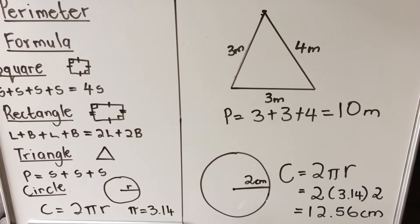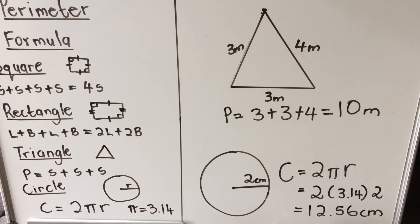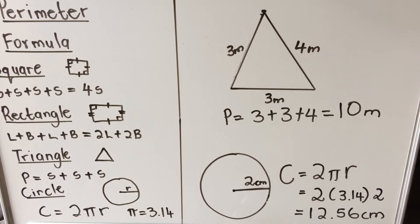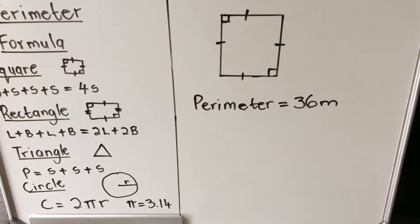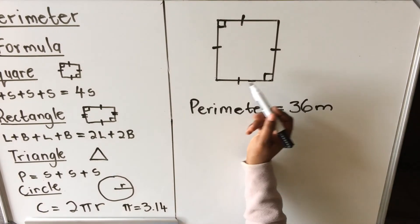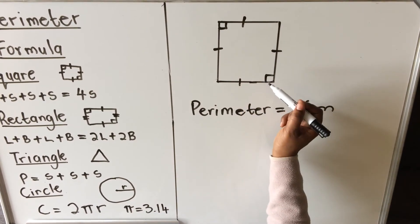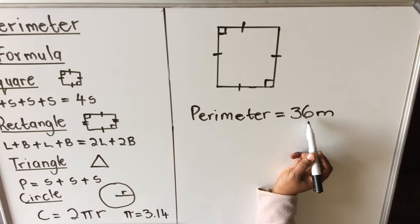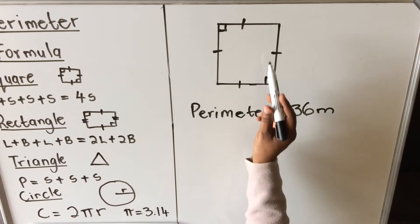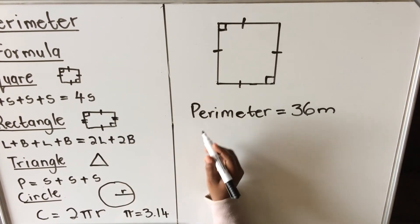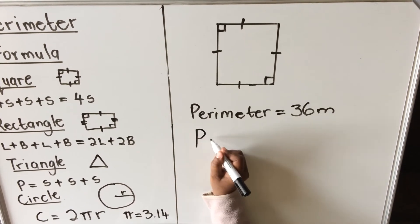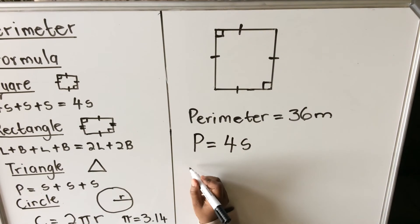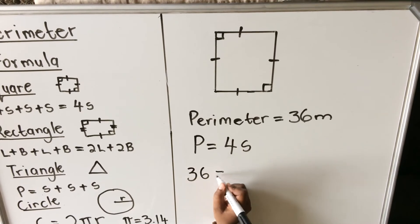The last example: you are given the perimeter and need to find the side length. We're using a square where all sides are equal and angles are 90 degrees. The perimeter of the square is 36 meters, and we want to find one side. The formula for the perimeter of a square is four times side, so 36 equals four times side.